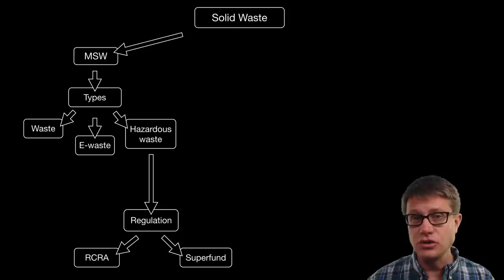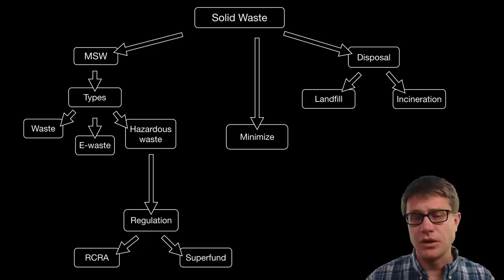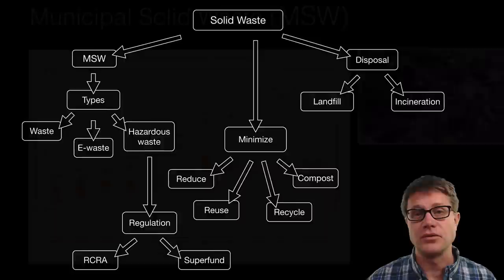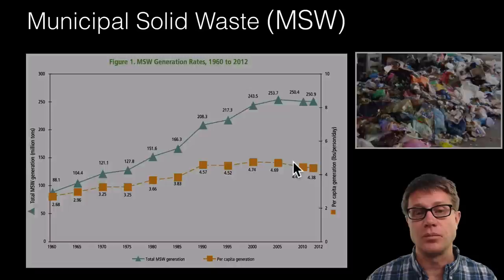That solid waste is eventually disposed of either in a landfill or incinerated. But the key point is how do we reduce the amount of solid waste — how do we minimize that? The one you are probably familiar with is the idea of the three R's: reduce it, reuse it, recycle it. And a type of that is going to be composting. Municipal solid waste in the U.S. over the last half century has been increasing from 88 million tons of MSW in 1960 to around 251 million tons today. It is starting to level off as we start to recycle more.